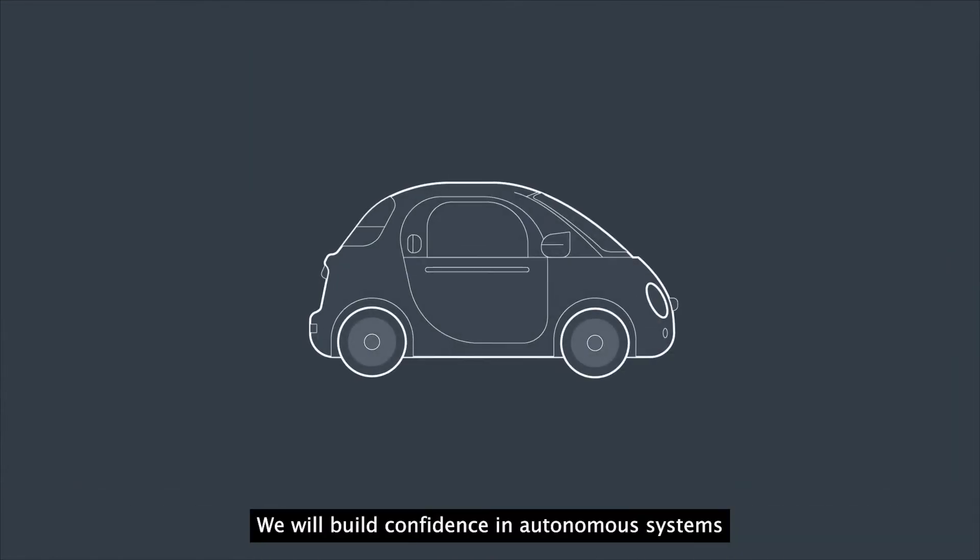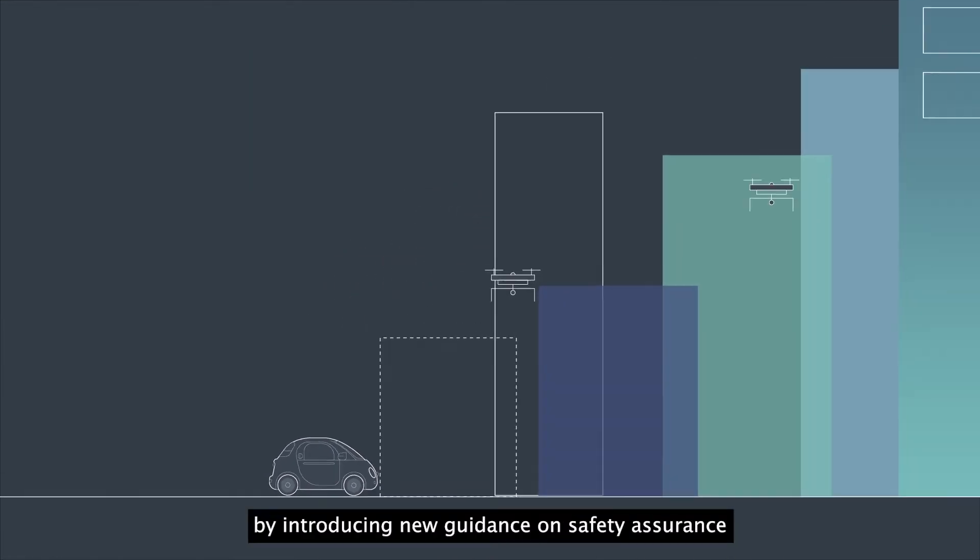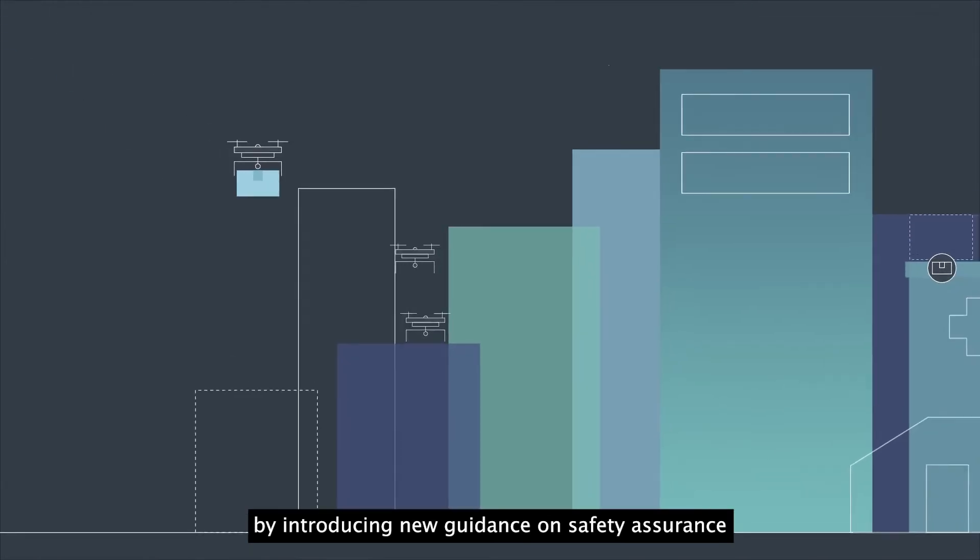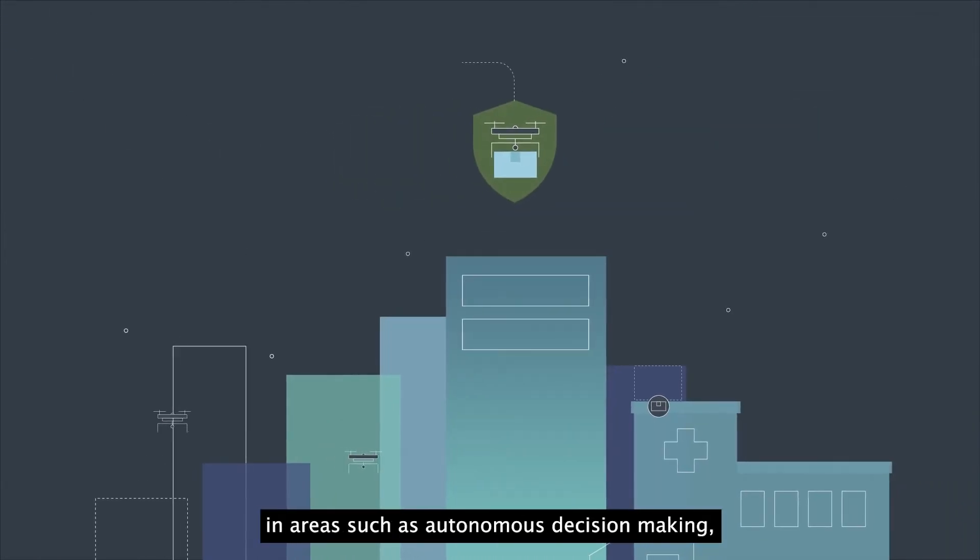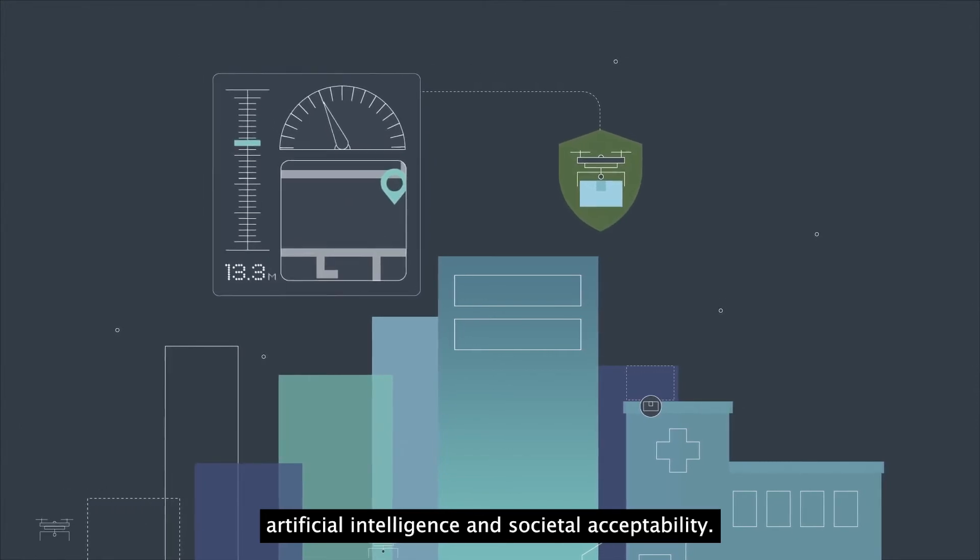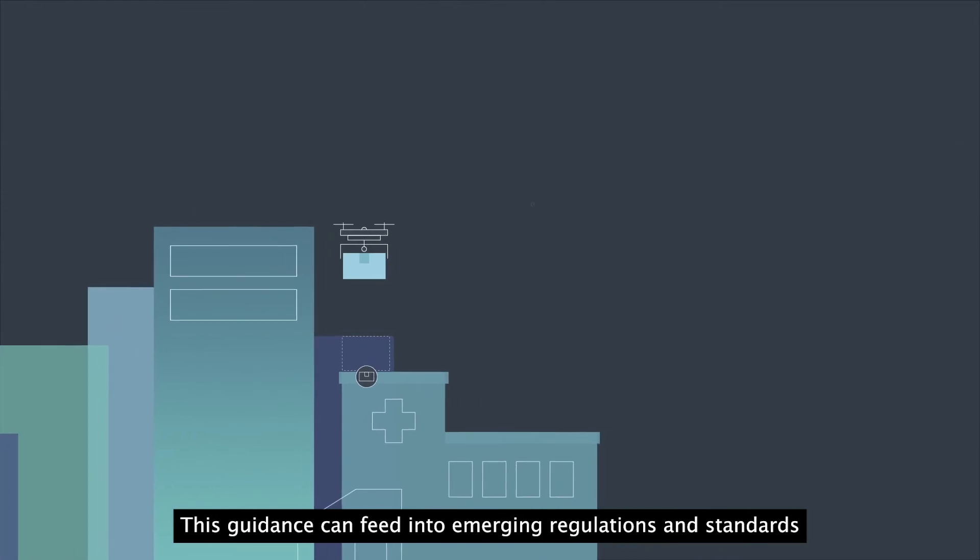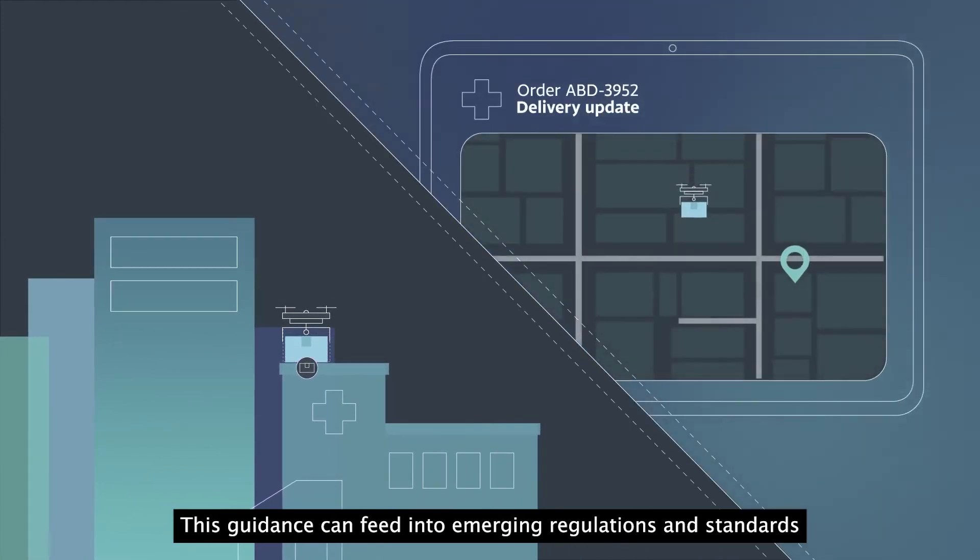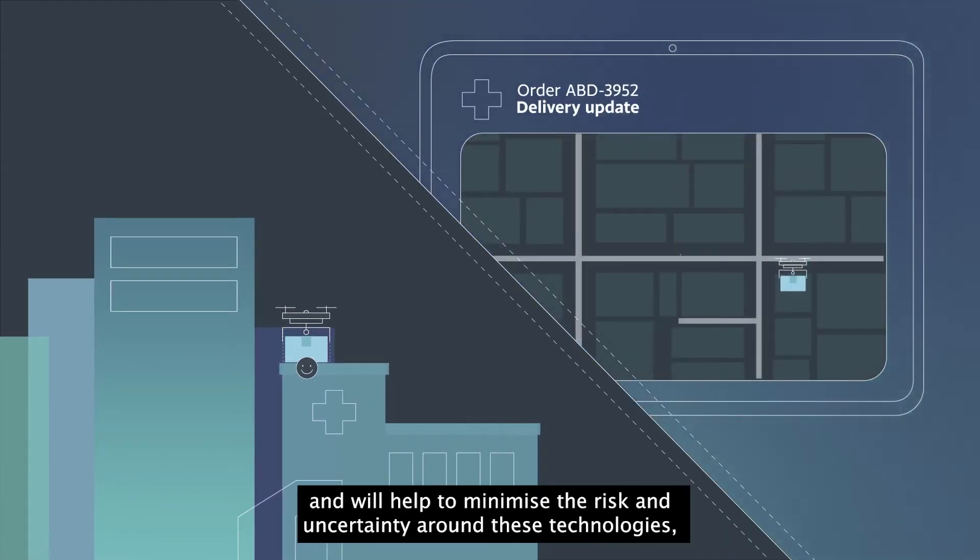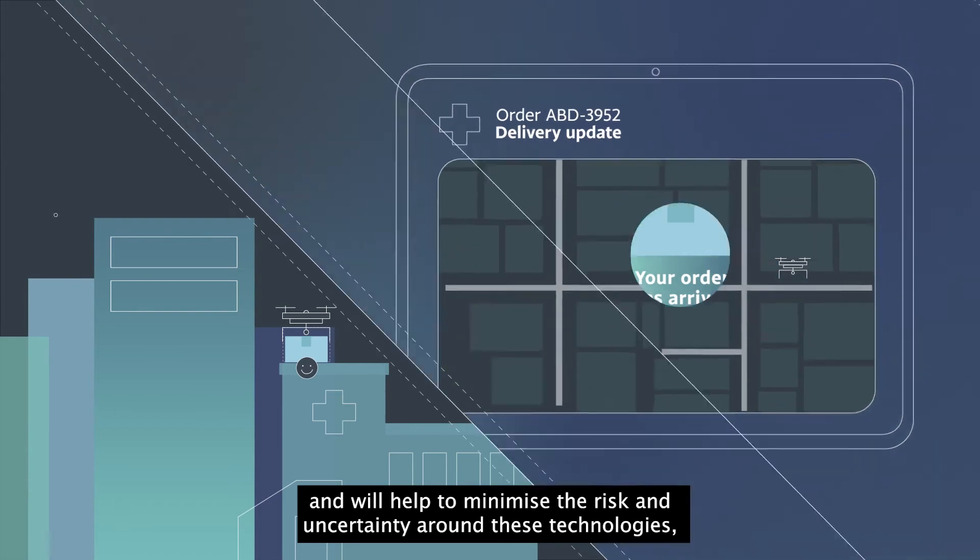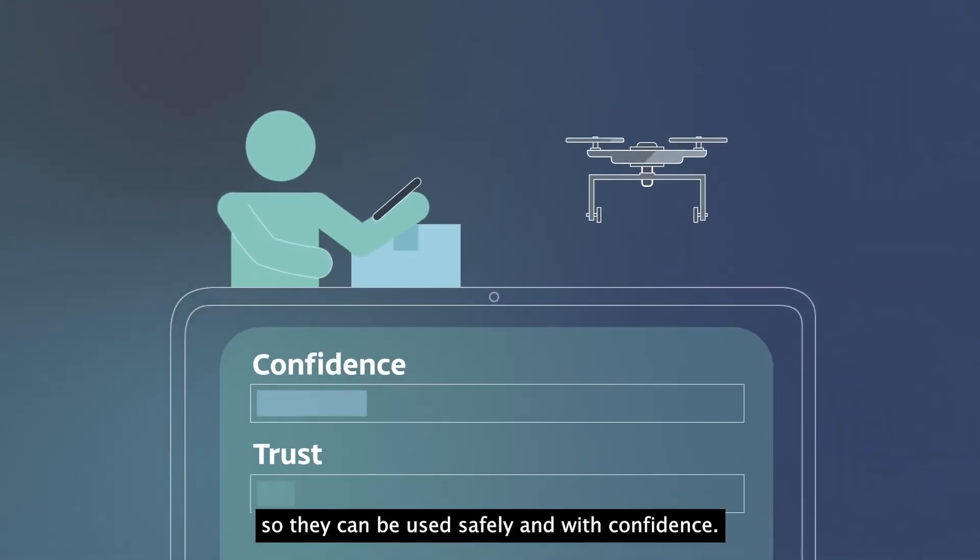We will build confidence in autonomous systems by introducing new guidance on safety assurance in areas such as autonomous decision making, artificial intelligence and societal acceptability. This guidance can feed into emerging regulations and standards and will help to minimize the risk and uncertainty around these technologies so they can be used safely and with confidence.